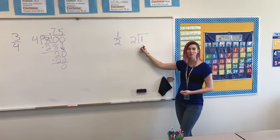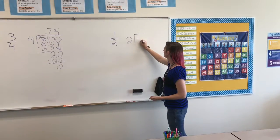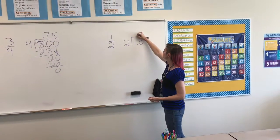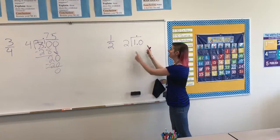Now, 2 doesn't fit into 1, so we're going to use our decimal rule. Put the decimal and a 0. Bring the decimal point straight up. Now I'm looking at 2 fitting into 10.